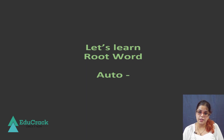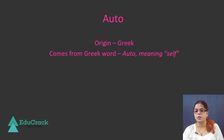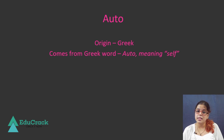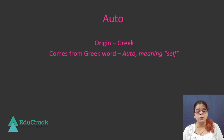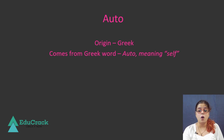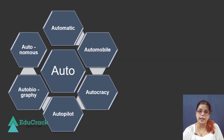Today, the word that we are going to discuss is auto. Let's have a look at the word auto. Auto is a Greek word that comes from the Greek word auto. The origin of the word auto is Greek, and the Greek meaning of the word auto is self. Let us see how we have incorporated the word auto in English and what are the different words that have auto in them.